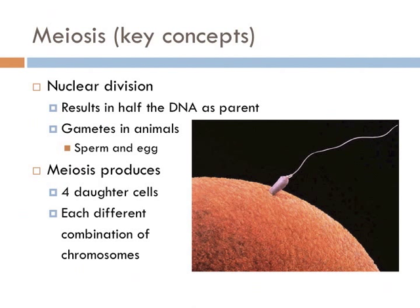Meiosis has a lot in common with mitosis. Like mitosis, it's a process where the nucleus divides. However, the main difference is that where mitosis results in a more or less exact copy of the chromosomes, meiosis results in producing a cell with exactly half of the DNA as the parent.